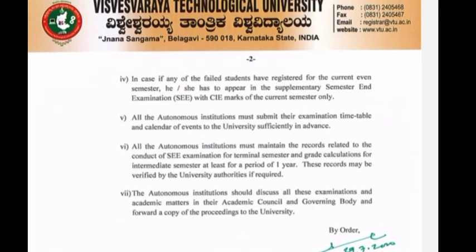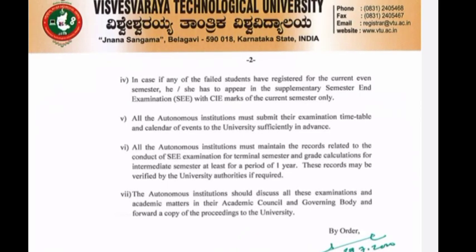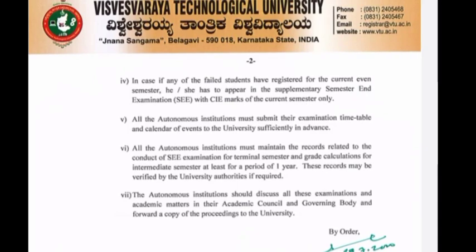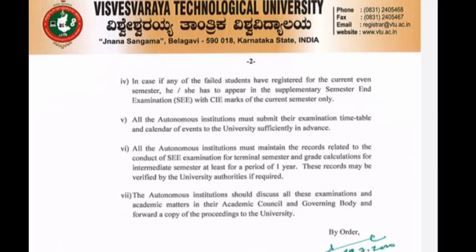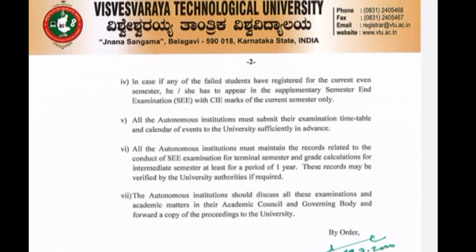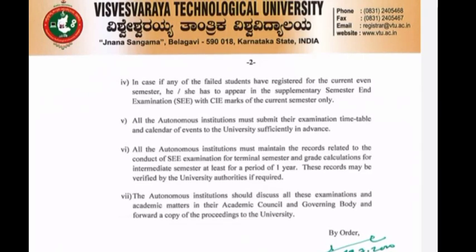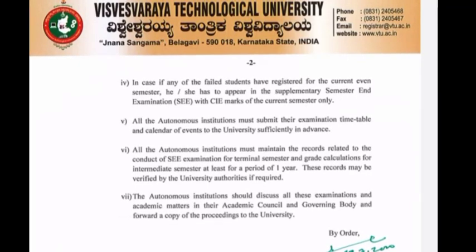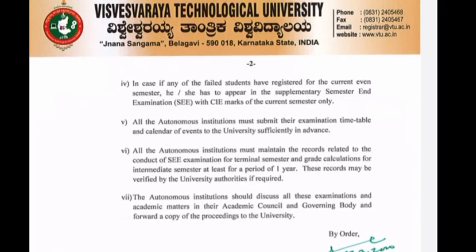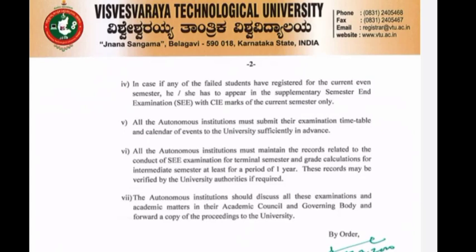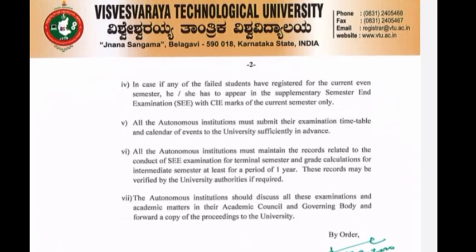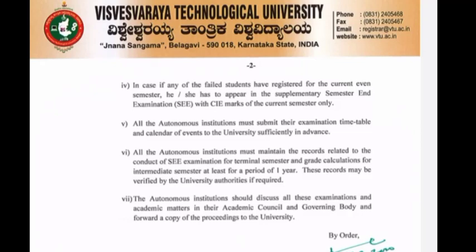Points 5 through 7: other respective universities and colleges, including final students, must complete correction and valuation. Autonomous institutions should discuss these examinations and academic matters in their academic council and governing body, and forward a copy of the proceedings to the university's academic calendar.